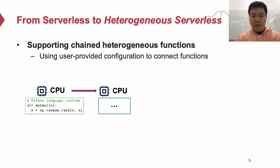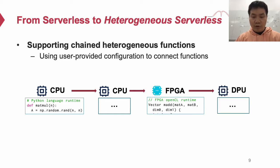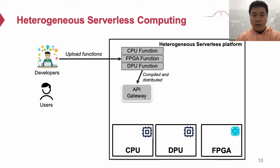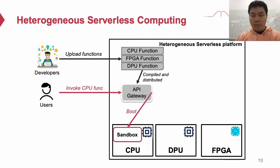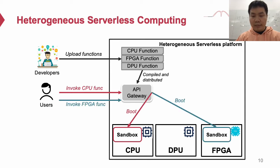We also assume that heterogeneous serverless platforms will chain functions using a user-provided configuration file. As shown in the figure, we can connect different CPU functions and also functions written for devices into the same chain. For the heterogeneous serverless platform, developers can write and upload functions for any devices supported by the platform, including CPU, FPGA, and DPU. These functions will be compiled into binary container images or FPGA images. When a user invokes a function, the platform will find the function and schedule the instance into a corresponding device like CPU or FPGA.